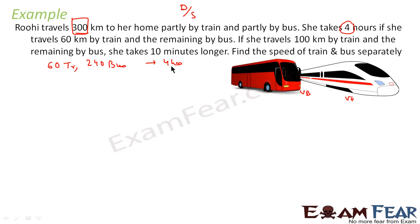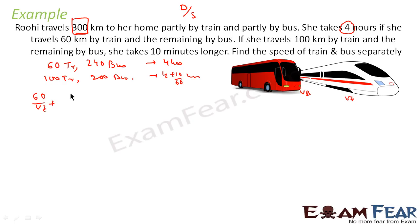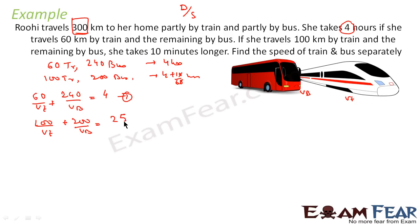If she travels 60 km by train, the remaining 240 km is by bus, and total time is 4 hours. If she travels 100 km by train, the remaining 200 km is by bus, and she takes 10 minutes longer — that is 4 + 10/60 = 25/6 hours. Using time = distance/speed, the two equations are: 60/Vt + 240/Vb = 4, and 100/Vt + 200/Vb = 25/6.